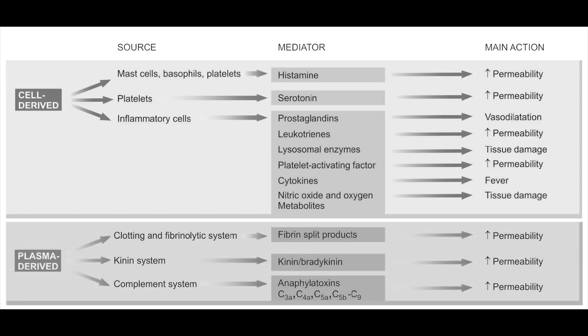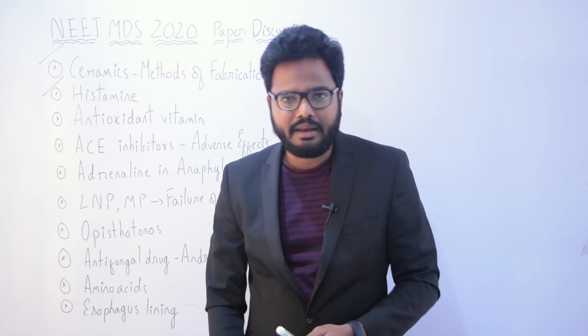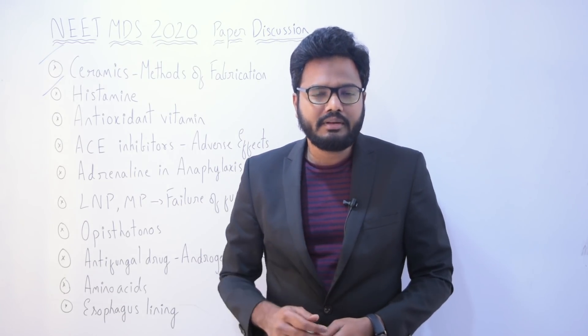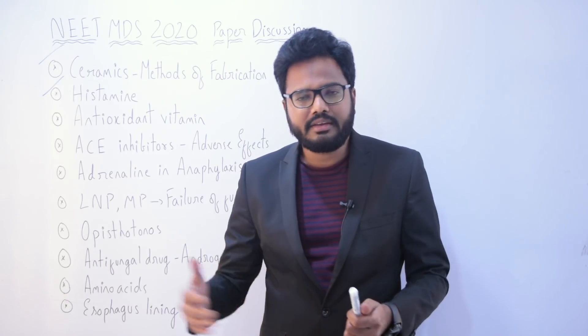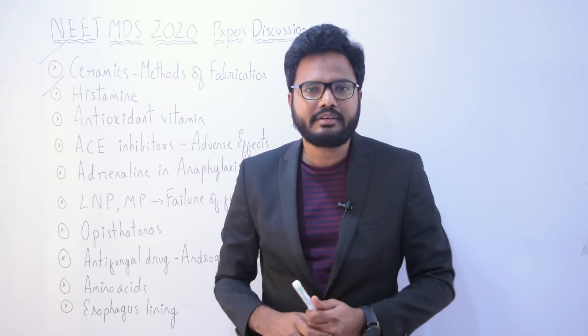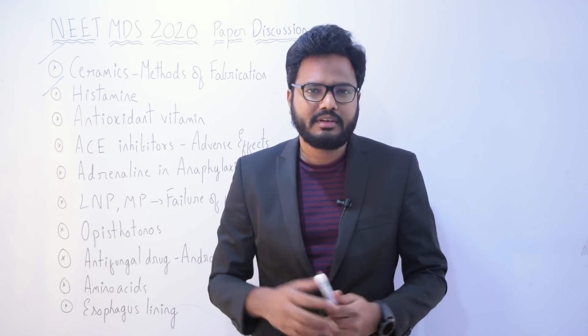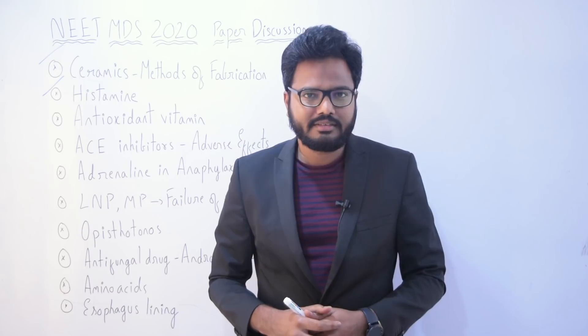The main actions of histamine include vasodilation, increased vascular permeability, itching and pain. You can also find the table with various chemical mediators of inflammation which we discussed in our e-classes.